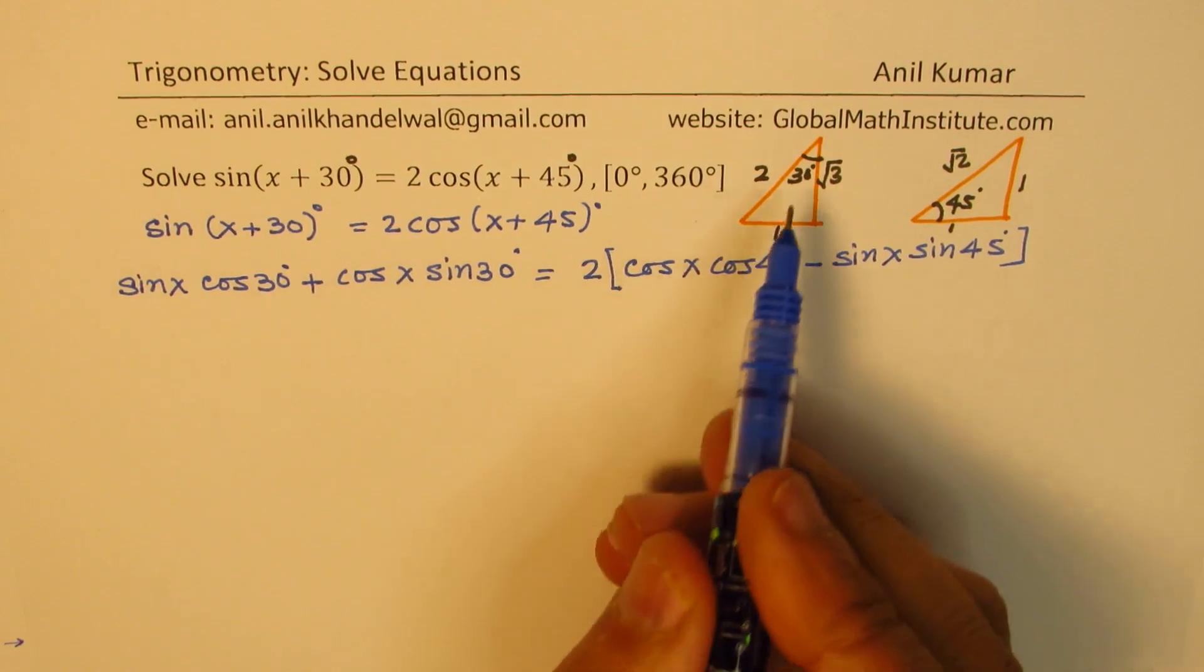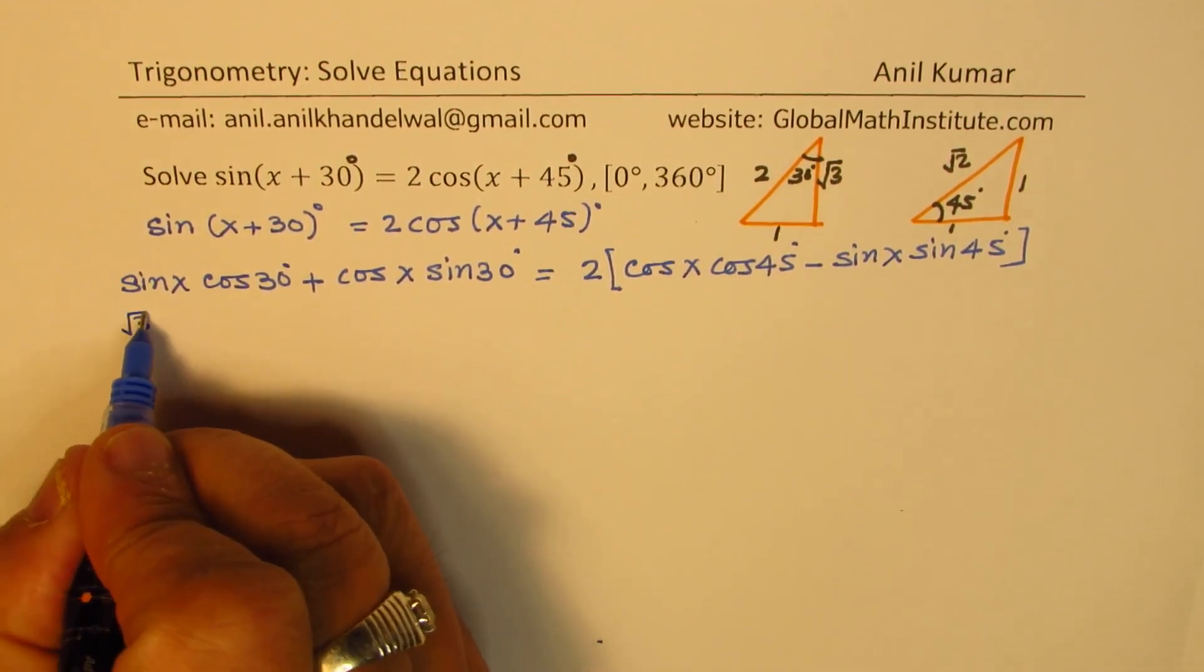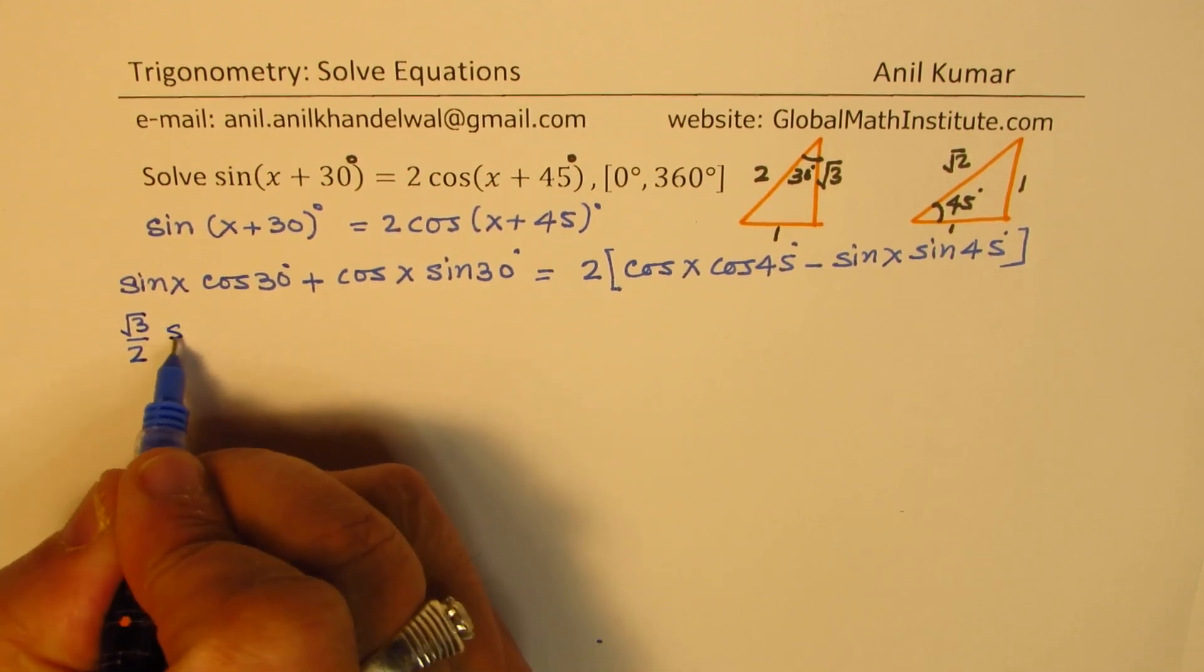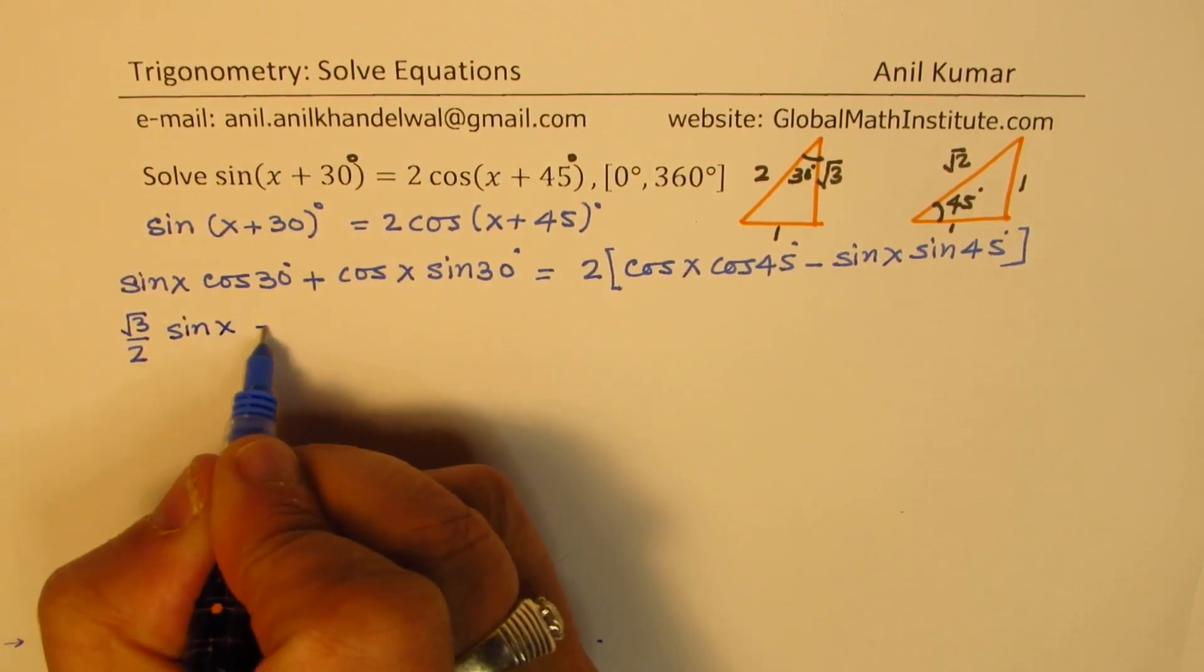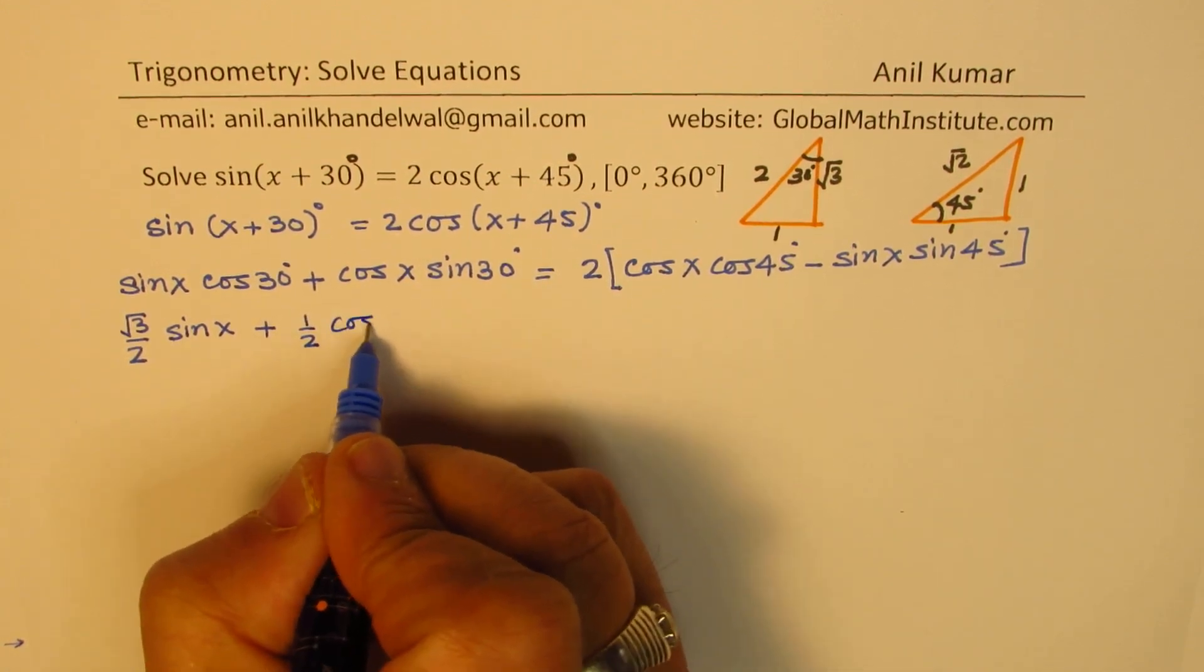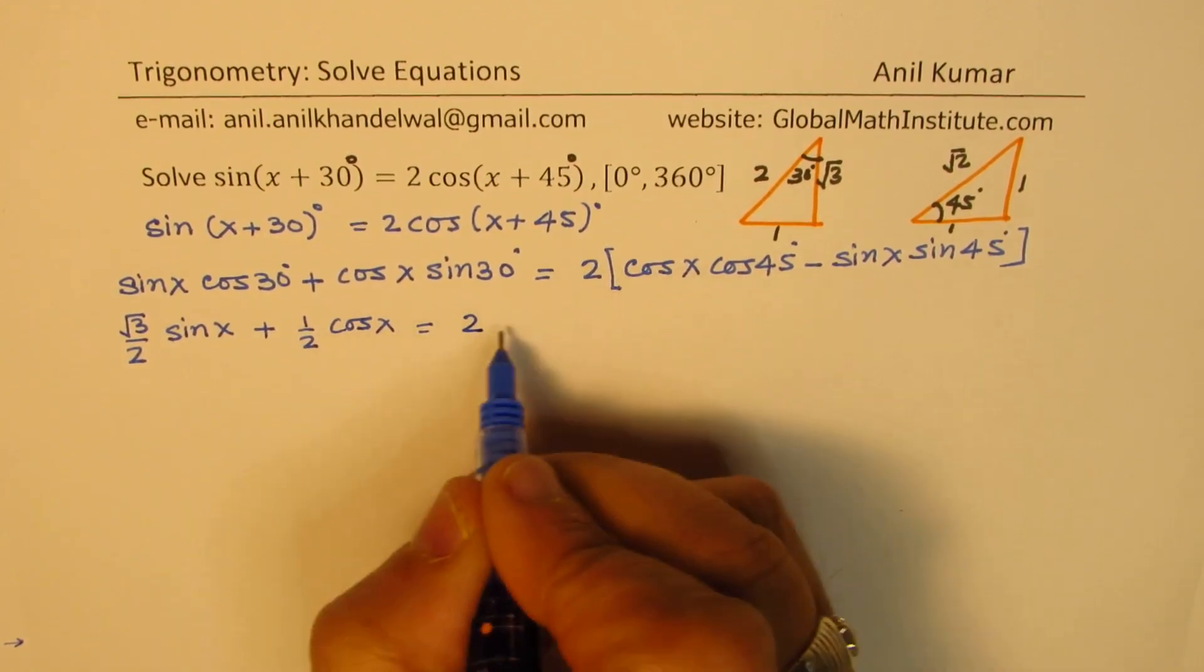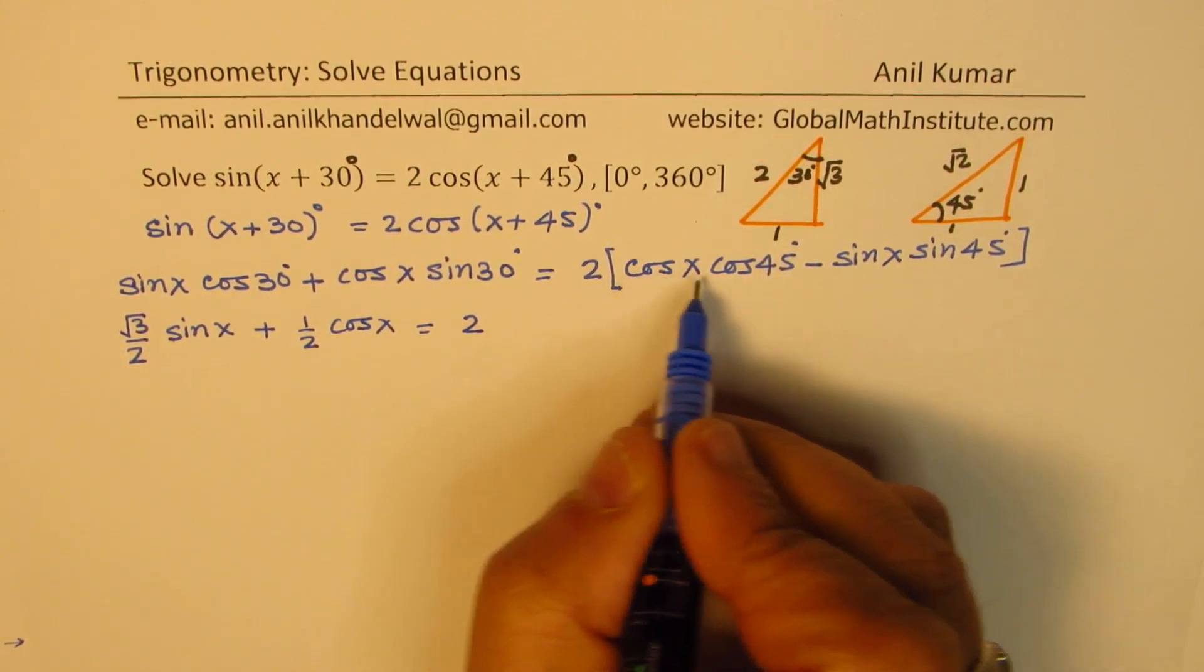So let's substitute the values. Cos 30 will be square root of 3 over 2. So we get (√3/2)sin x plus half cos x equals to 2 times, we can open the bracket.